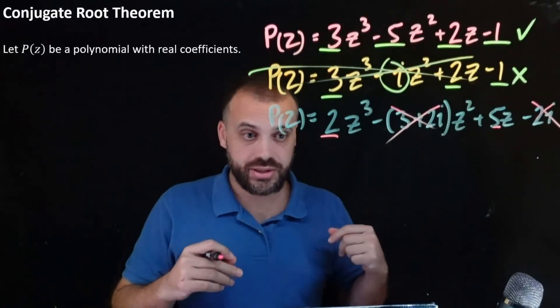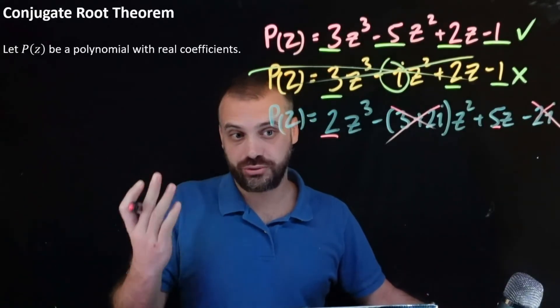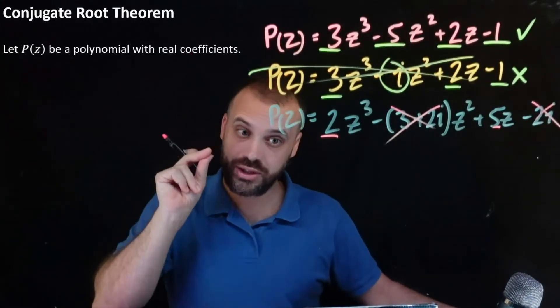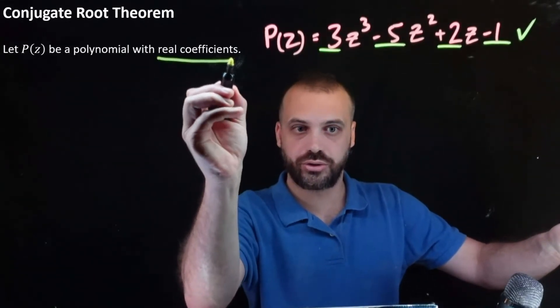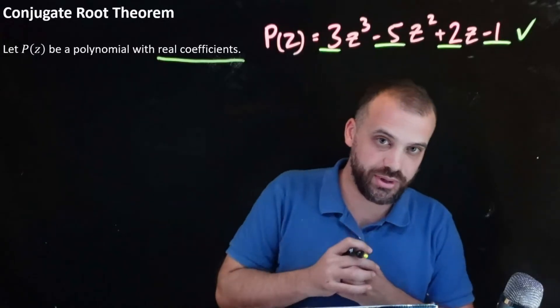Why am I making a big deal of this? Because students keep using the conjugate root theorem in things like this when they shouldn't. So ending that rant, don't forget real coefficients. It's probably the most important thing about the conjugate root theorem.